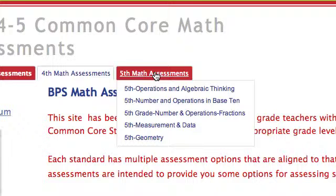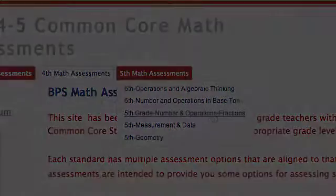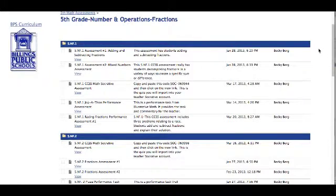So you'll notice that under 5th grade, we have the five domains of our Common Core listed. And so that's how our standards are organized. So for today's example, we're going to focus on taking a look at 5th grade, Number and Operations Fractions, keeping in mind that each domain is set up in the same way. So let's take a look at how this is set up.